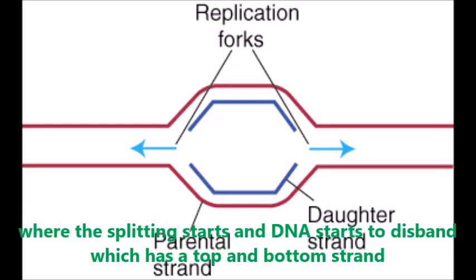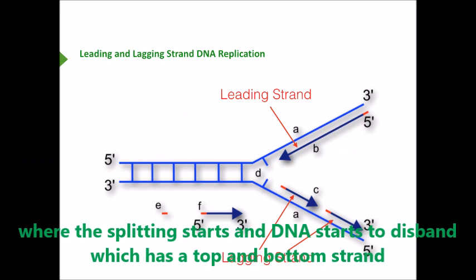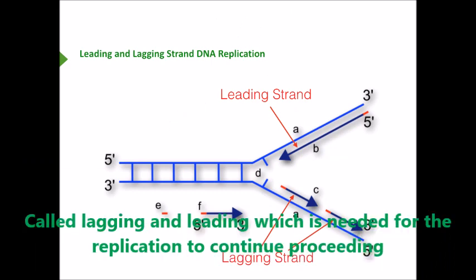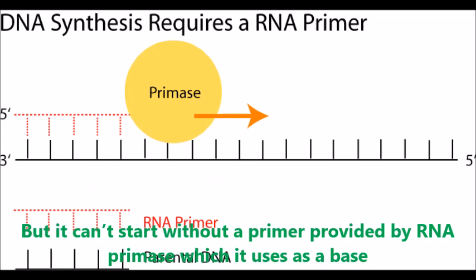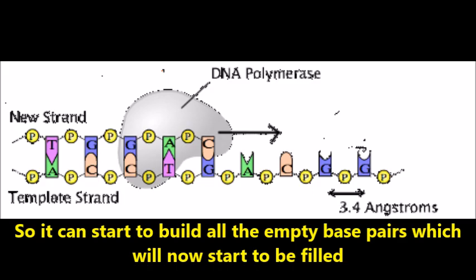Where the splitting starts and the DNA starts to disband - which has a top and bottom strand called lagging and leading, needed for replication to continue. There's an enzyme called DNA polymerase that adds nucleotides down the strand at its own pace. But it can't start without a primer provided by RNA primase, which it uses as a base so it can start to build all the empty base pairs which will now start to be filled.